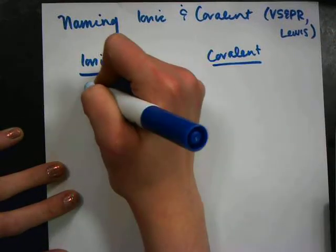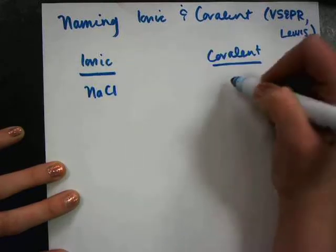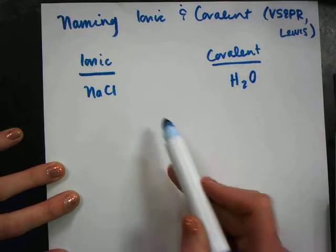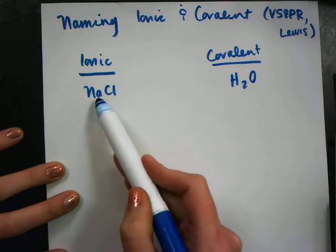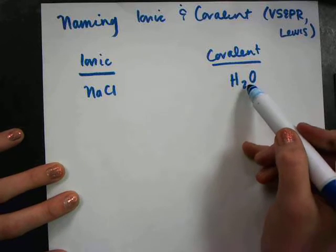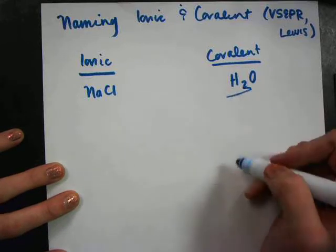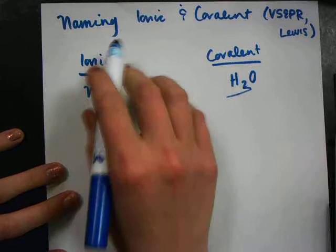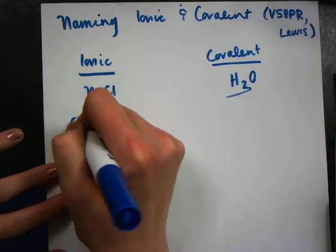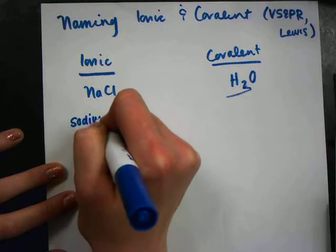My prime example over here is going to be NaCl, and my prime example over here is going to be H2O. I've already said that this is ionic because it has a metal and a nonmetal. I know that hydrogen is a nonmetal, oxygen is a nonmetal, so this is a covalent bond. When I'm naming an ionic compound, I just give it its name, no prefixes. So I'm going to call this one sodium chloride.